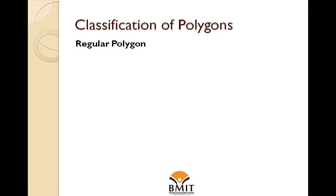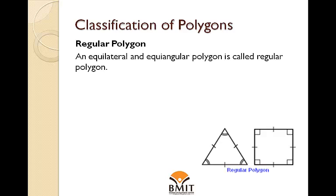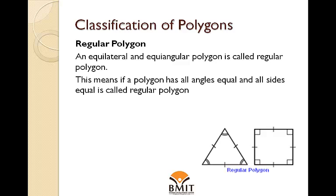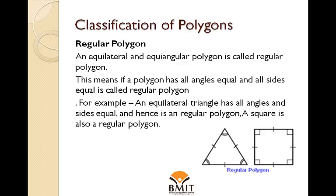Regular Polygon: An equilateral and equiangular polygon is called a regular polygon. This means if a polygon has all angles equal and all sides equal, it is called a regular polygon. For example, an equilateral triangle has all angles and sides equal and hence is a regular polygon. A square is also a regular polygon.